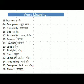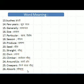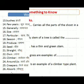Straight means seedha. Own means apna. Climber means latidar paudha. Surrounders means chaaron or. Creeper means raynewala paudha. Absorb means soakna.